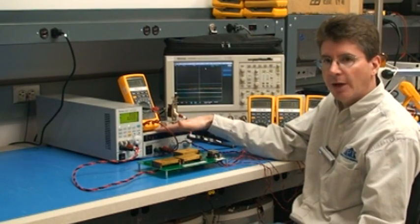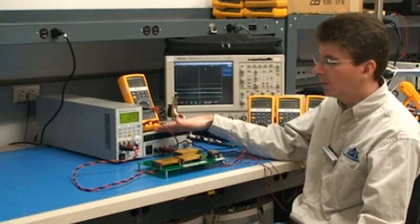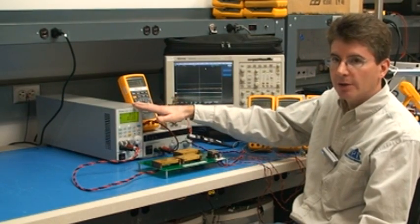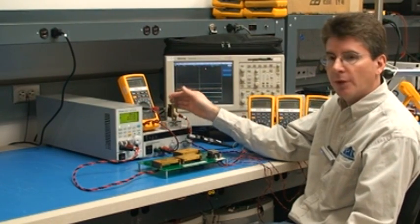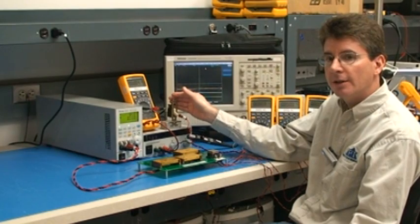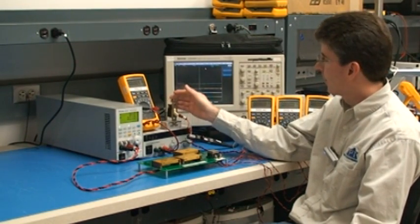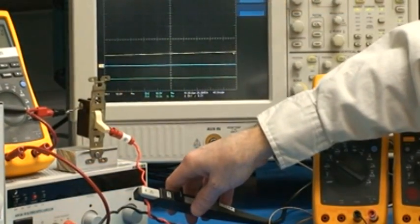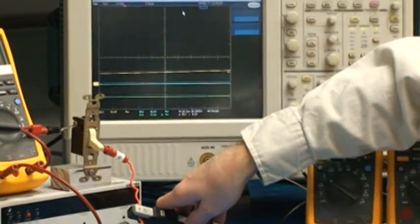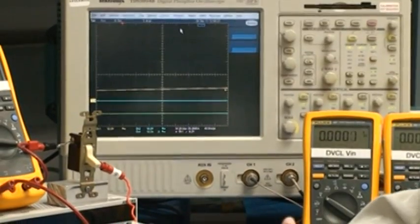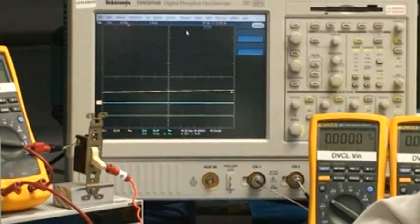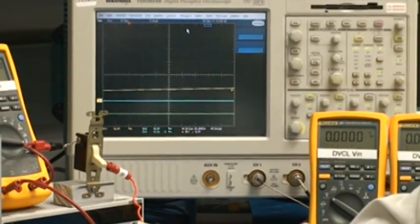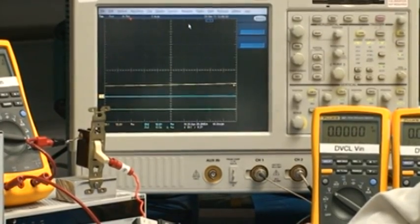We've got a DC power supply providing 28 volts input, an electronic load, and we've got a switch where we can turn on the input voltage with a very fast rise time. On the scope, we will measure input current with this current probe. We will also measure the input voltage waveform to the system board, and the voltage waveform at the output of the DVCL.